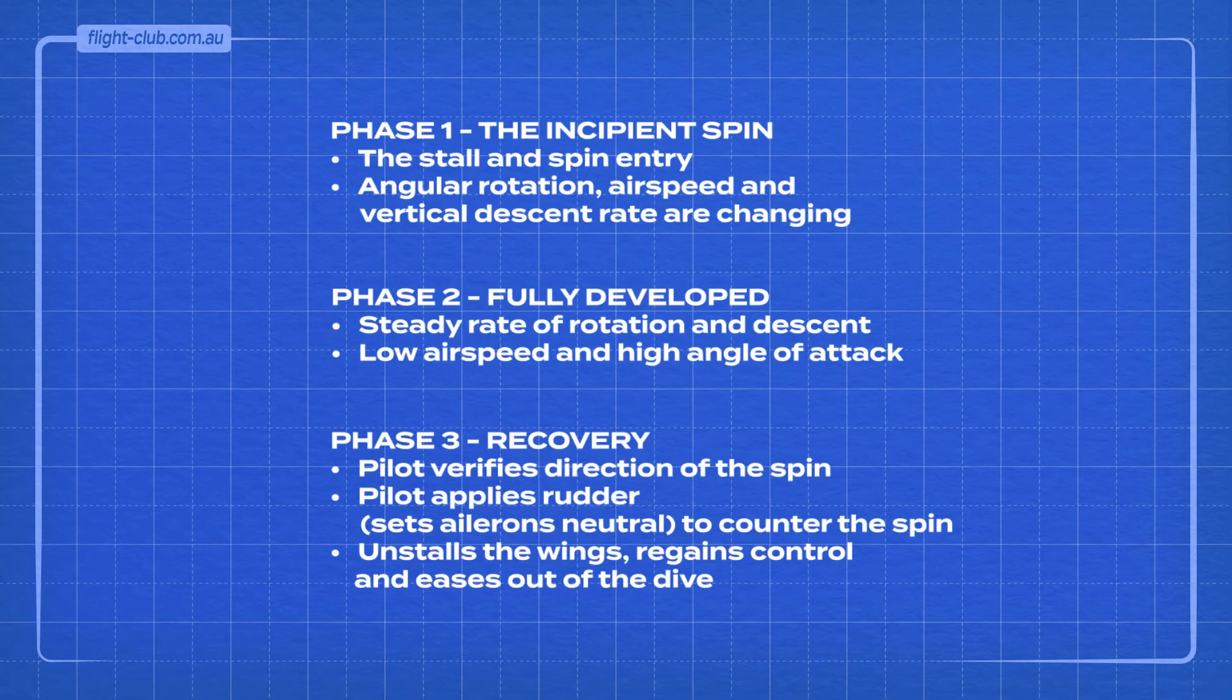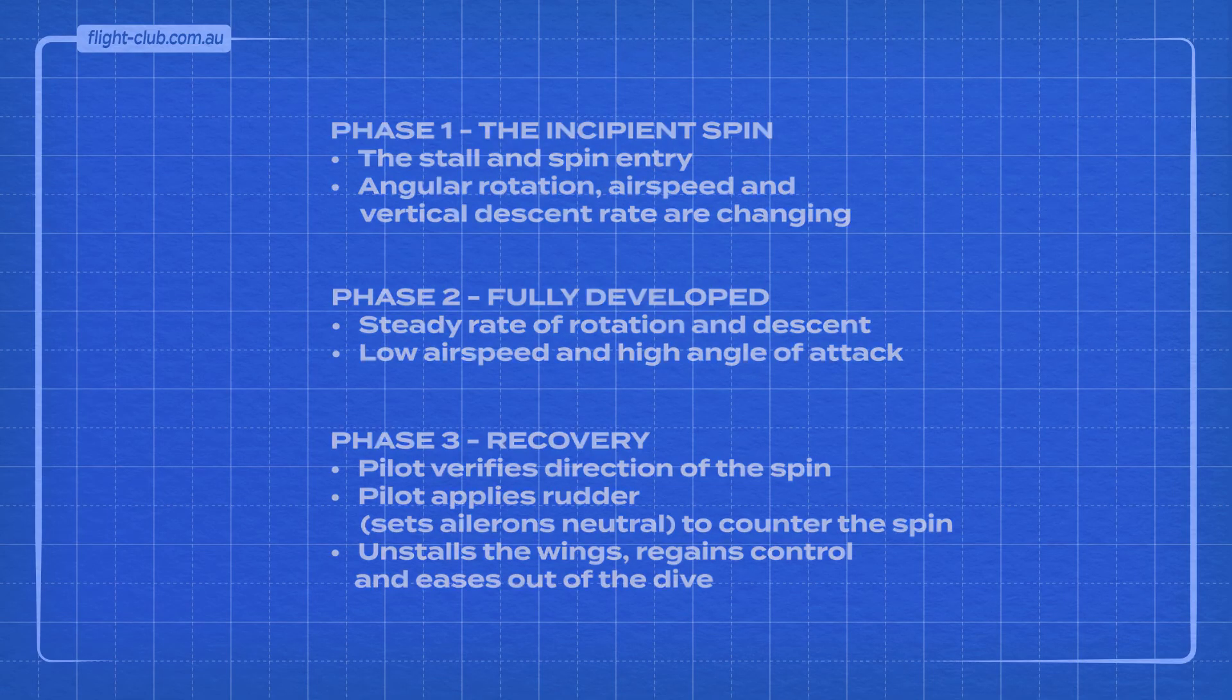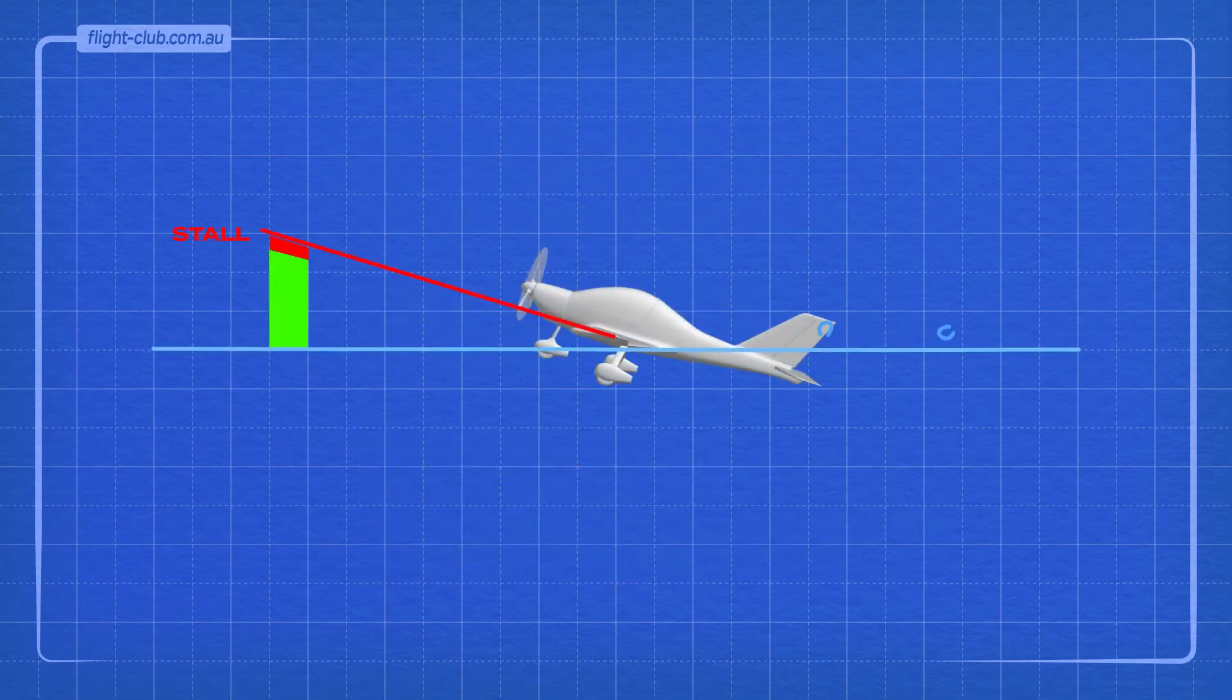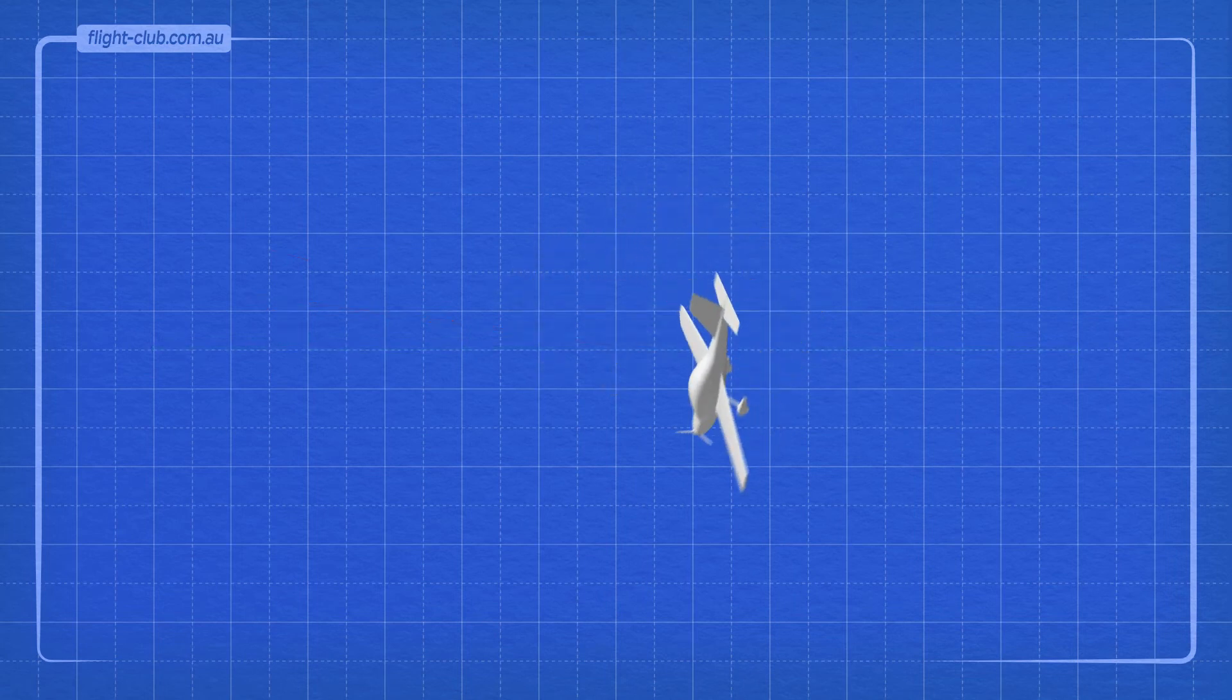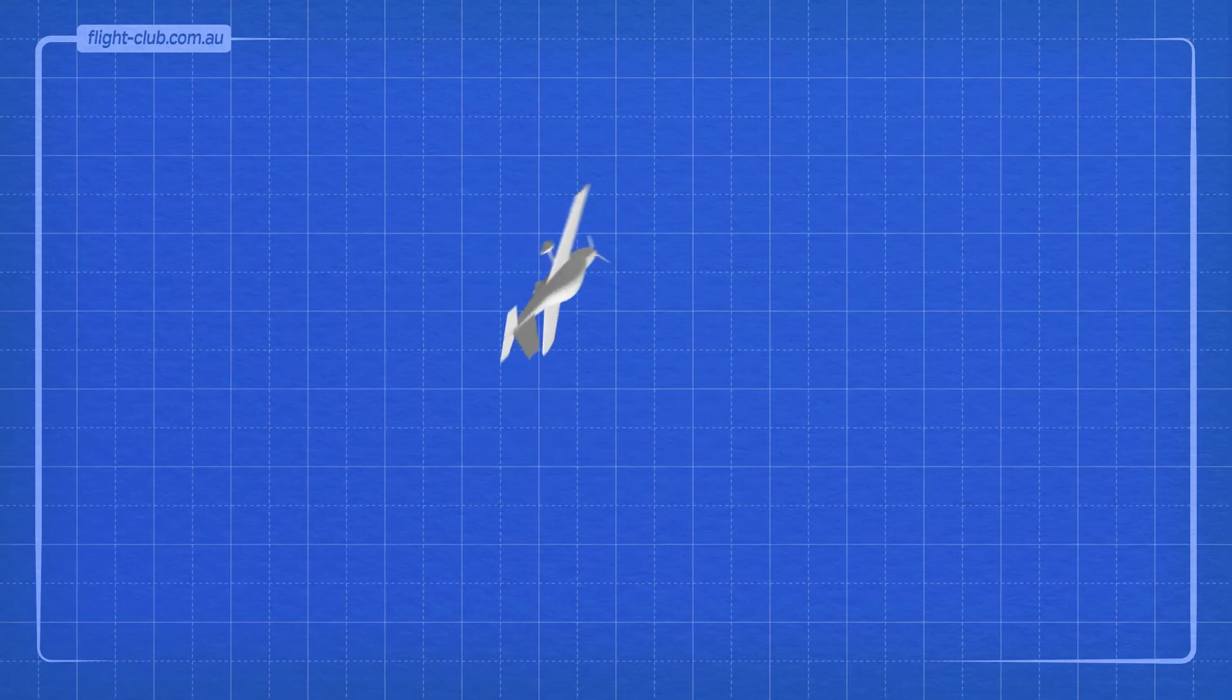Once the inputs are initiated to stop the spin, the aeroplane can usually recover in less than one spin. Recovery from a normal stall is achieved by reducing the angle of attack, which restores the airflow over the wing. In addition to this, spin recovery involves stopping the rotation.